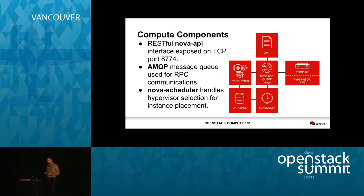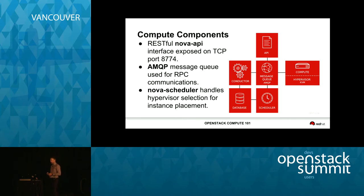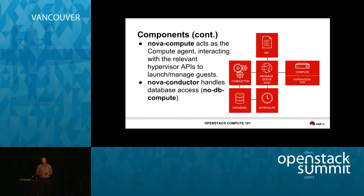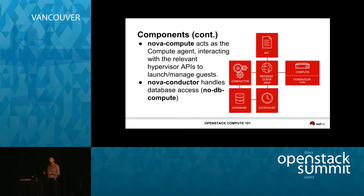We have Nova Conductor, which is responsible for taking the instance build request, requesting the scheduler to find where to place it, and also for interacting with the database and the compute nodes. The reason the conductor was originally introduced is so that you didn't need to have database credentials on every single compute node — they talk to the database through the conductor. Nova Compute, on the right-hand side, acts as our compute agent — either talking directly to libvirt on the hypervisor, or in the case of the vCenter driver, talking to vCenter through its native APIs.